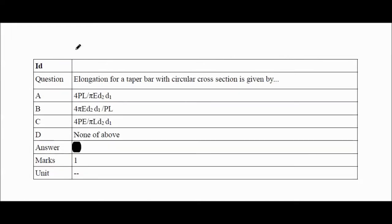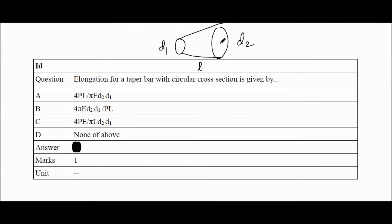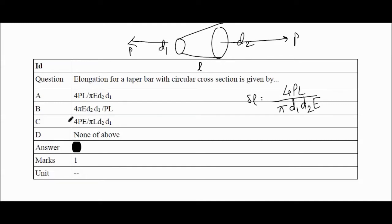This is very important: Elongation of a tapered bar with circular cross-section. For a tapered section of length L, with bigger diameter d2 and smaller diameter d1, if axial force P is applied on both sides, the deformation formula is: ΔL = 4PL / (π × d1 × d2 × E). Checking all options, the first option is correct — answer is A.